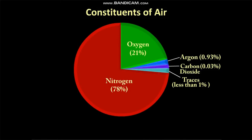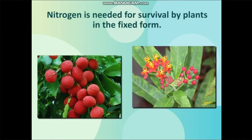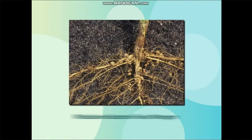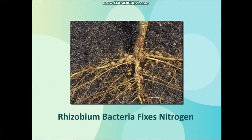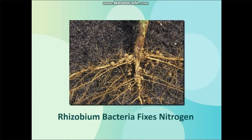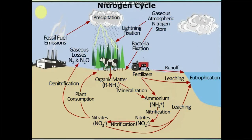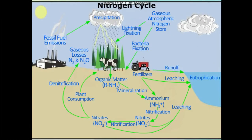Let's discuss the properties of these gases one by one. Nitrogen makes up 78% of the volume of the air. It is needed for survival by plants. Bacteria found in the soil fixes the nitrogen, which is then used by the plants. Nitrogen moves between the atmosphere, biosphere, and geosphere in different forms in a process called the nitrogen cycle.